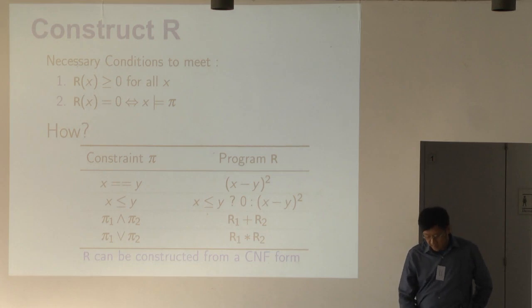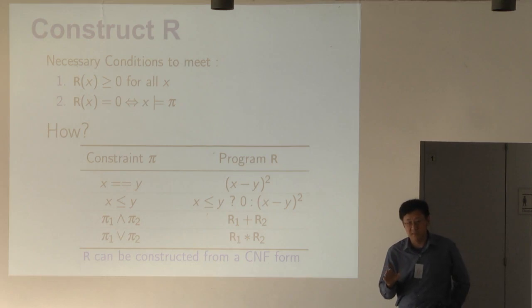Now the question is how do we construct this R to have these two conditions? I'll just illustrate this with a few constructs. It's a very simple reduction. Imagine that our constraint is in a conjunctive normal form, π, and we construct R from the formula. Suppose we have two floating point variables, X is equal to Y, and then we just produce X minus Y squared to measure how far they are. And if X is less or equal to Y, we use this C ternary construct. So if this condition holds, then it's zero, otherwise measure their distance. Very simple. And then if it's a conjunction, it's just a sum. Disjunction times. If you stare at this for a few minutes, you'll be convinced that this gives us this reduction.